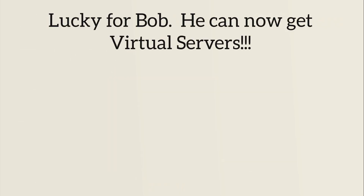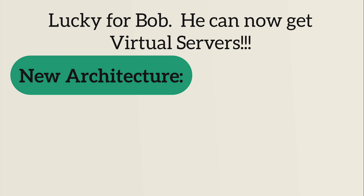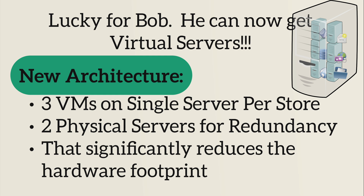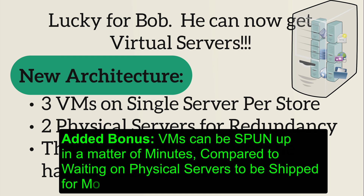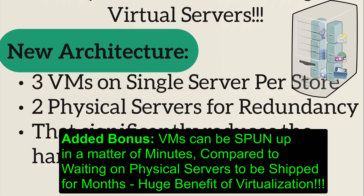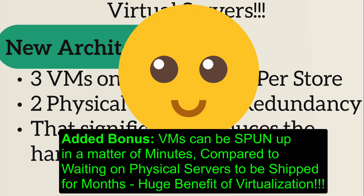However, lucky for Bob, he can now get virtual servers because virtualization just became a reality, and this is year 2000. In this new architecture, he can run three virtual machines on a single physical server, so he no longer has to get a server per application. Instead, he can run different VMs or virtual machines on a single server per store. That means instead of having six servers, he can now have two physical servers for redundancy, and that significantly reduces the hardware footprint and saves Bob a ton of money. And now Bob is a happy camper again.